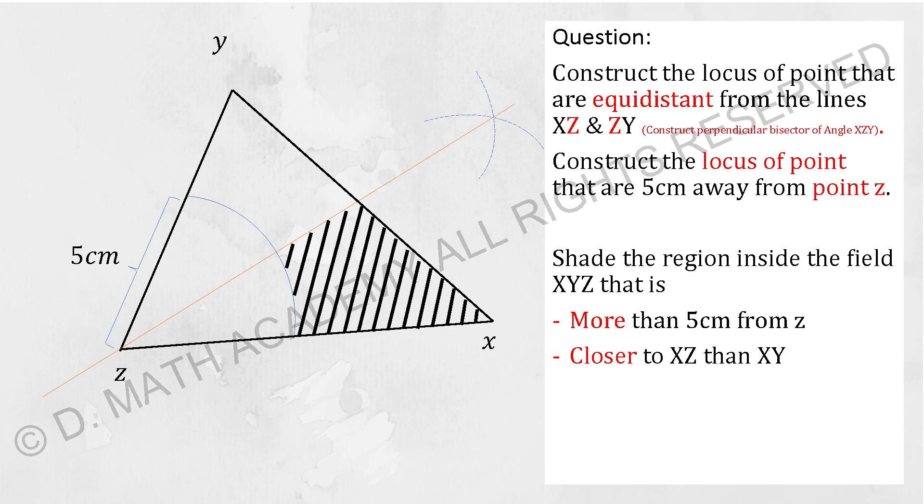So shade the area inside this field of XYZ that is more than 5cm from Z and closer to XZ than XY. The shaded part will be as shown there.